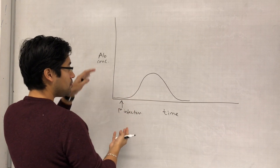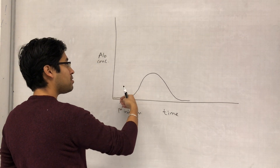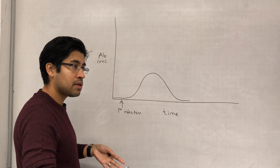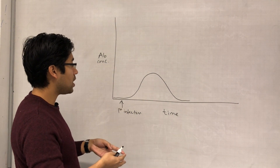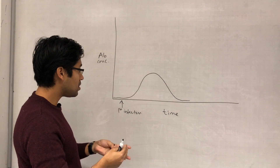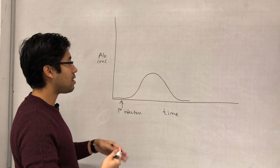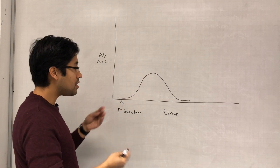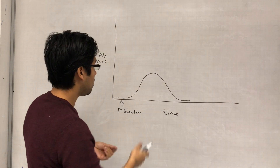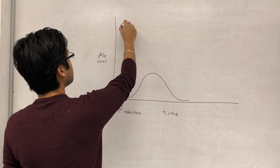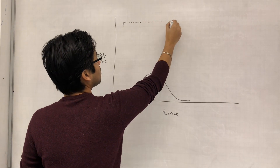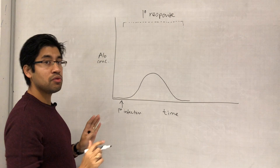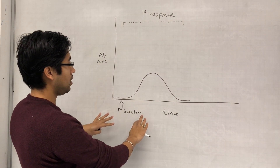The T helper cells are being activated by the antigen presented by the antigen presenting cells. This results in the selection of the T helper cells, which then causes differentiation, mitosis, and expansion of that population to produce T killer cells, T helper cells, and T memory cells. The T helper cells activate the B cells, eventually leading to antibody production by the plasma cells. You get this gradual increase in antibody concentration - this first peak is the primary immune response on first infection.